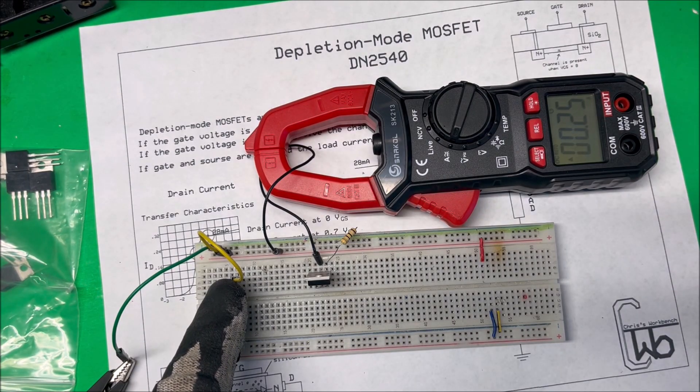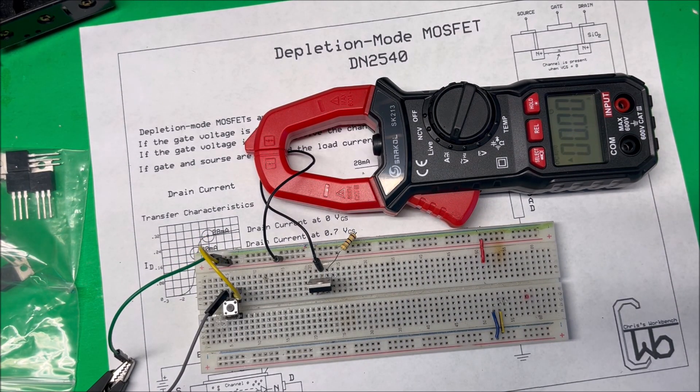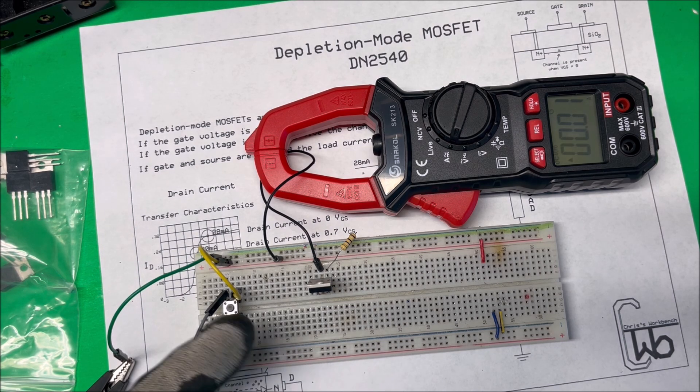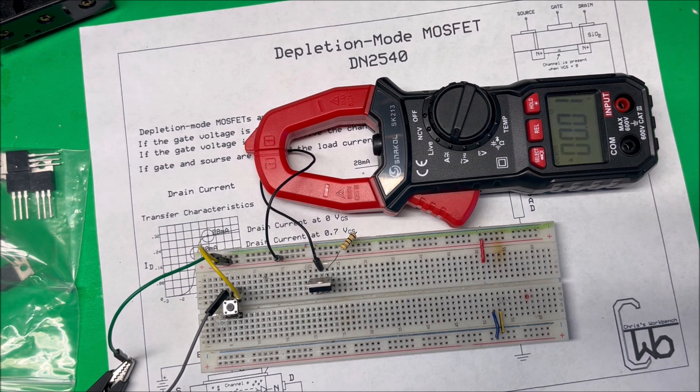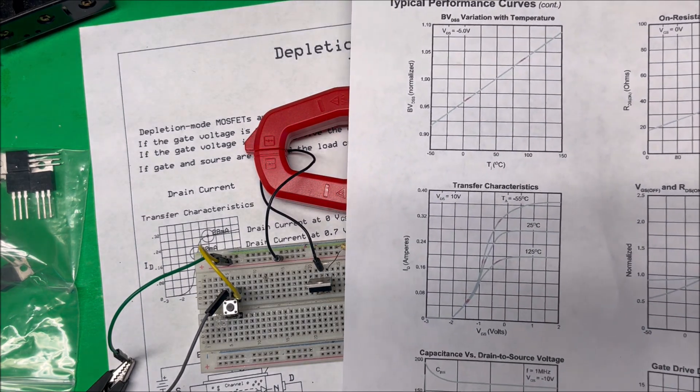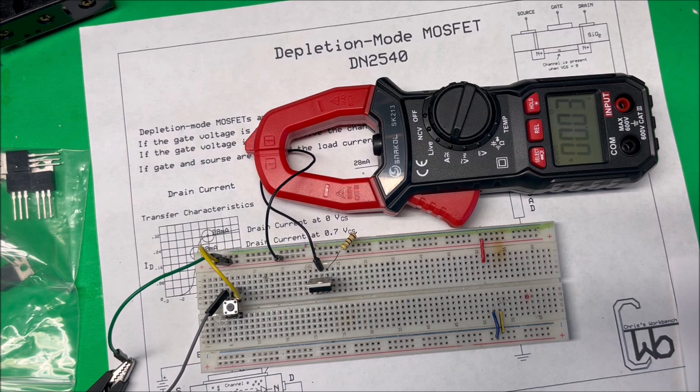So anyway, that's the depletion mode MOSFET. They're on when the gate to source voltage is zero. I have those shorted out and you get the current on the chart here, and so that works good. So I think I've learned my lesson.